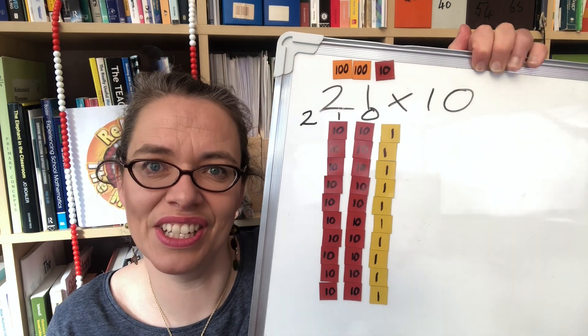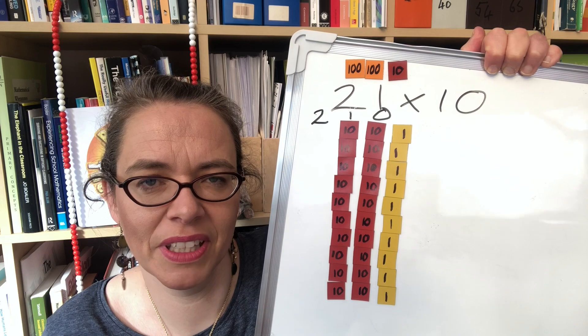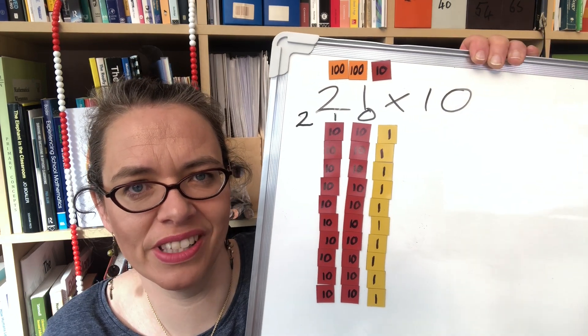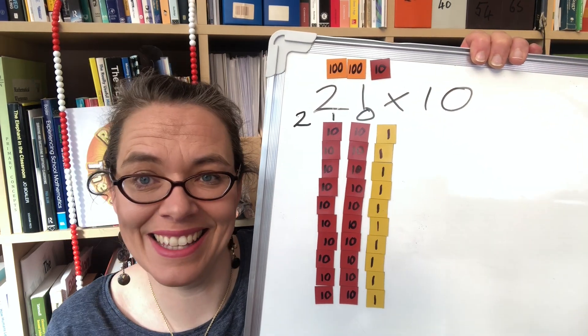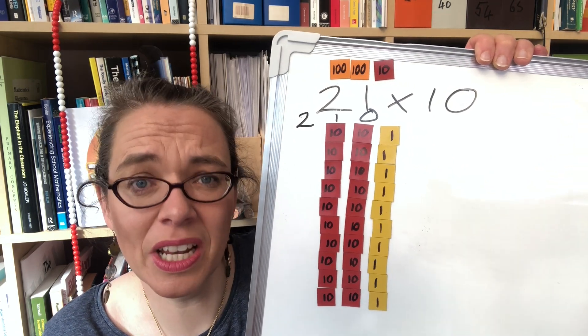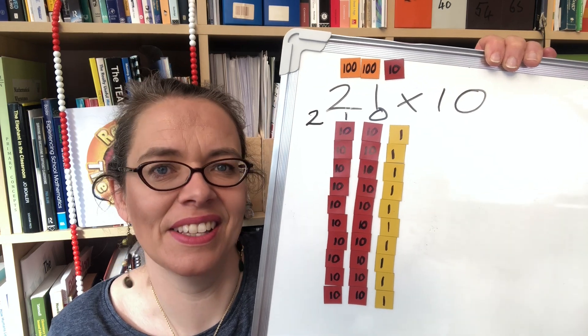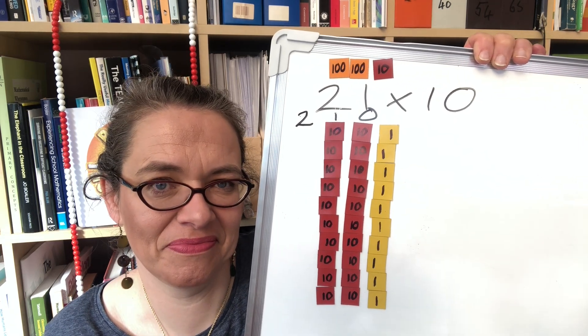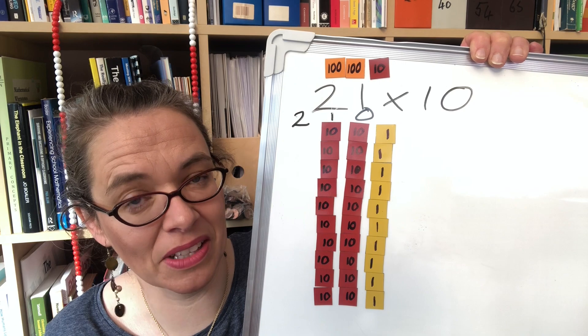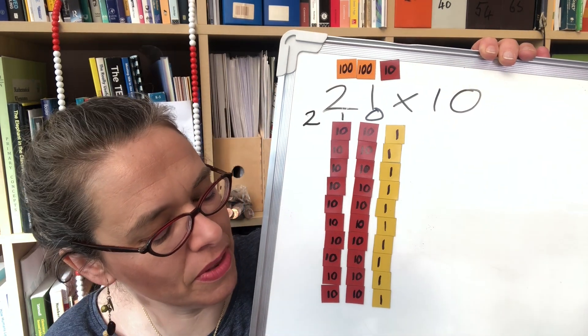Now of course it's much easier just to say stick a zero on the end but it's not got structural sense it's just a spell it's just a recipe for maths that works and it's really important that children learn that maths makes sense. It's not just about spells and recipes so it's worth putting the time in to make them think.